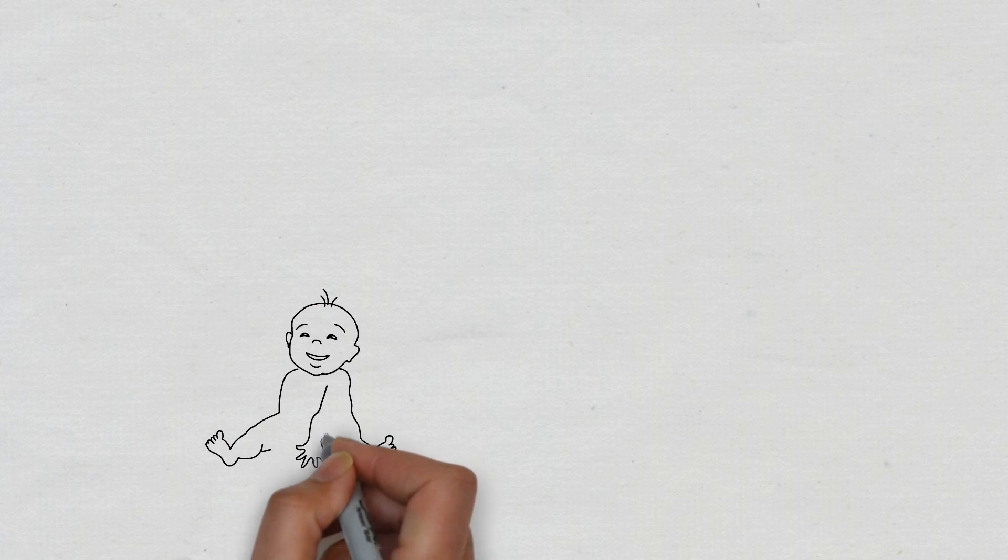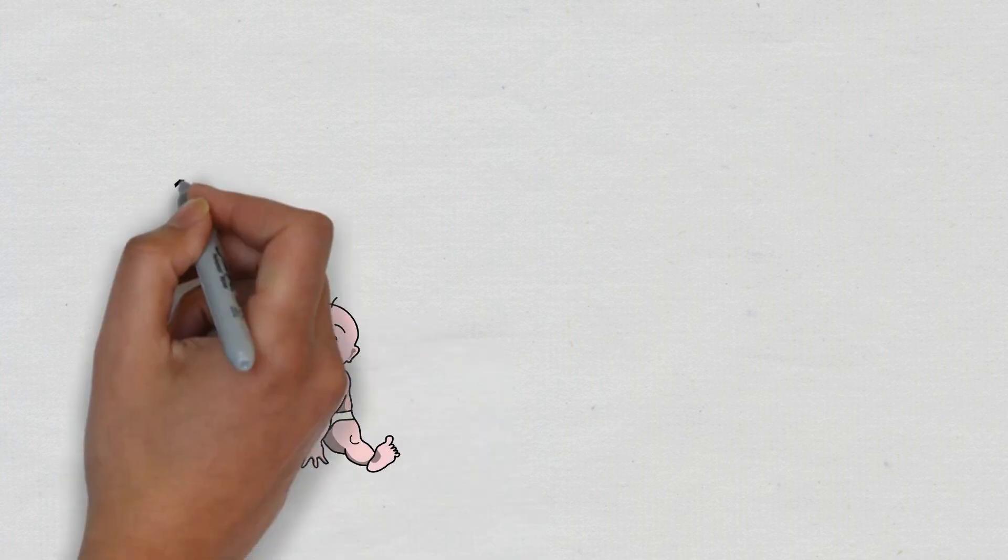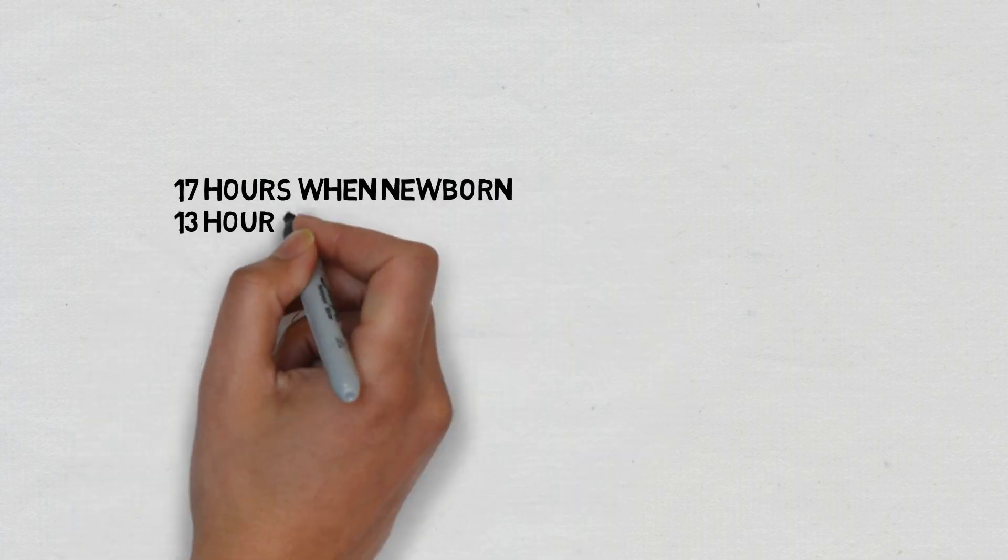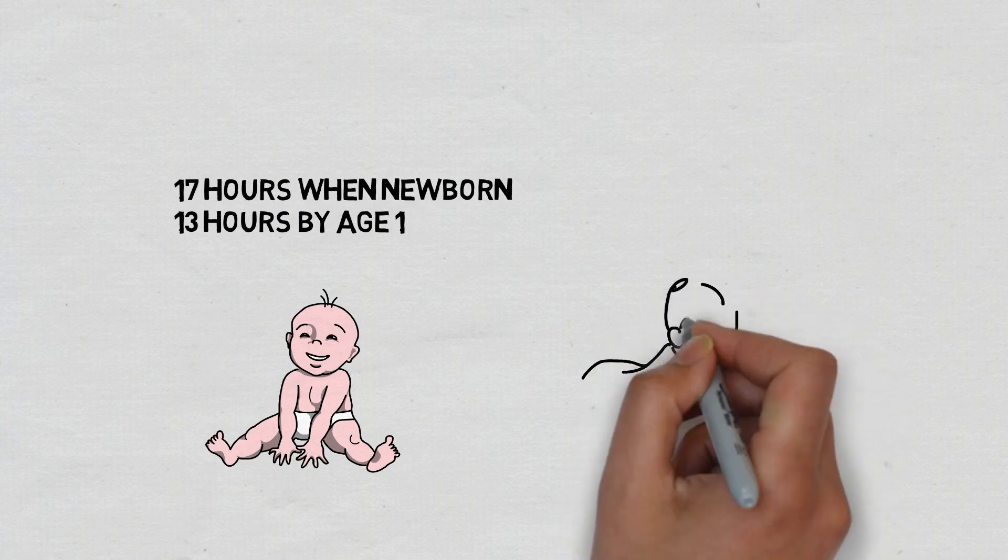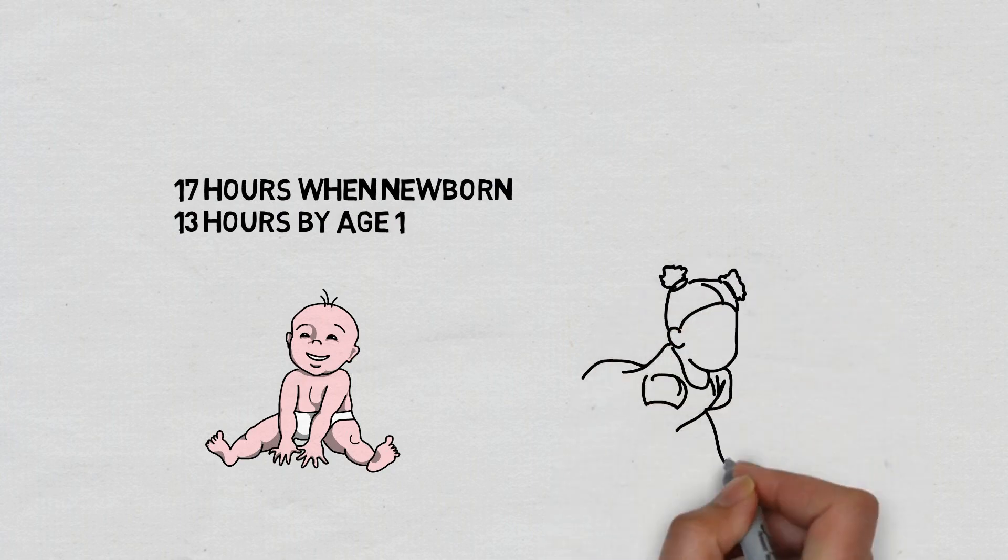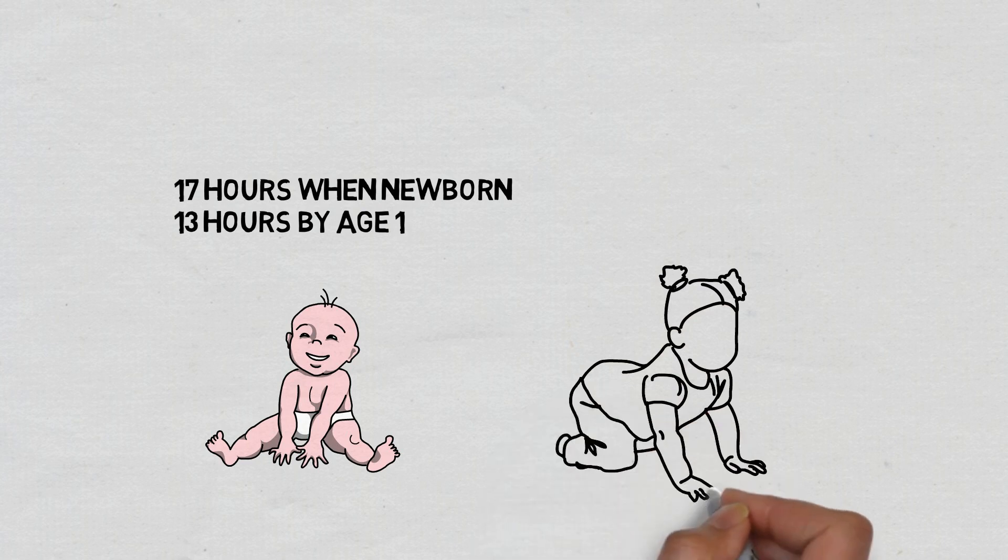First for babies, when they are newborn, their sleep may need to be as high as 17 hours, going down to around 13 hours at one year of age. Toddlers, on the other hand, need only around 10-14 hours, so clearly babies and toddlers do need a lot more sleep than most.